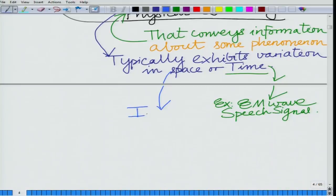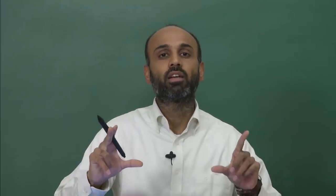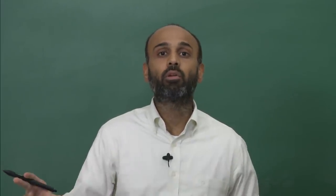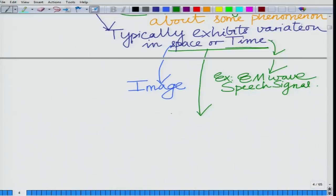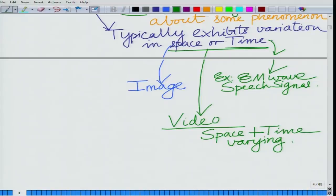An image can also be thought of as a signal in space. And we have signals naturally in both space and time — for instance, a video signal varies both in space (each frame can be thought of as an image, a 2D signal) as well as in time, because it comprises a sequence of frames. So a video signal exhibits variation in both space and time.